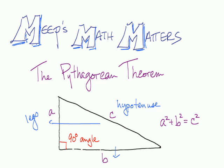There's also a proof that if you have a squared plus b squared equals c squared for a triangle, then it is a right triangle. I'm not going to show that here right now.